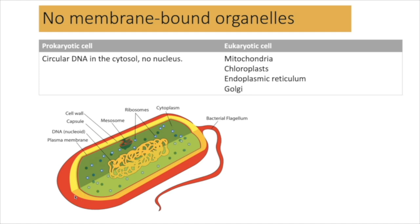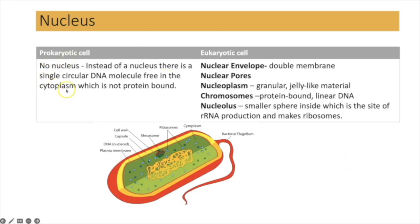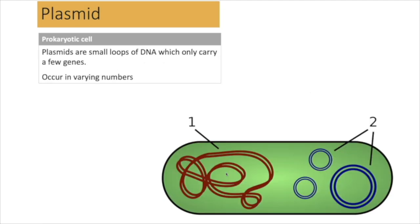Because prokaryotes have no membrane-bound organelles, they lack a nucleus, mitochondria, chloroplasts, Golgi apparatus, and endoplasmic reticulum. Their circular DNA is free within the cytoplasm, unattached to proteins. Plasmids are additional loops of DNA found in some bacteria — not all — carrying only a few genes, including genes for antibiotic resistance. Bacteria either don't have plasmids or have them in varying numbers.